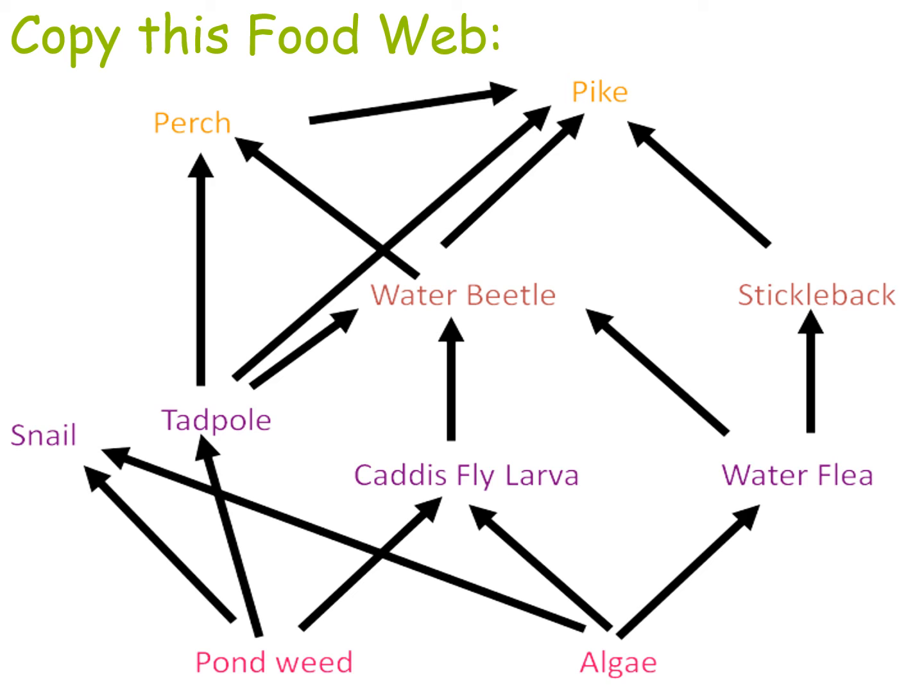This is the second food web to copy out — an electronic version is on Teams and Show My Homework, so print it or copy it as you prefer. This is likely a food web from a lake or river. Most of these organisms live in the pond on our school site between science and maths, with the exception of perch, pike, and stickleback. Pike is one of the largest fish in UK waters, about a meter to a meter and a half long and very ferocious. Once you've drawn this out, we'll ask you questions on the next slide.